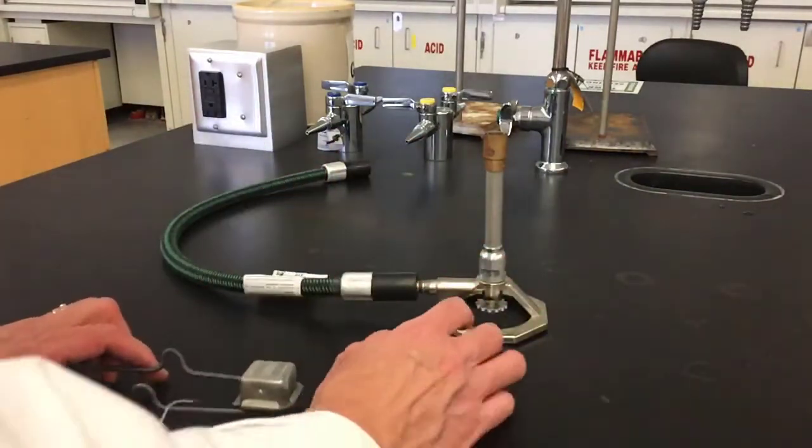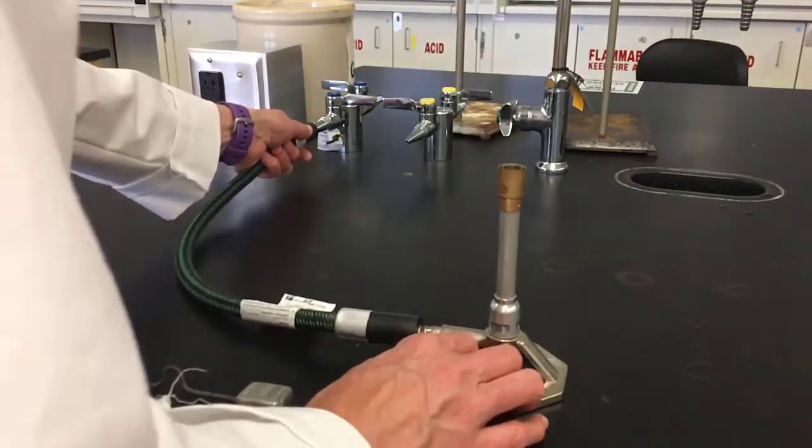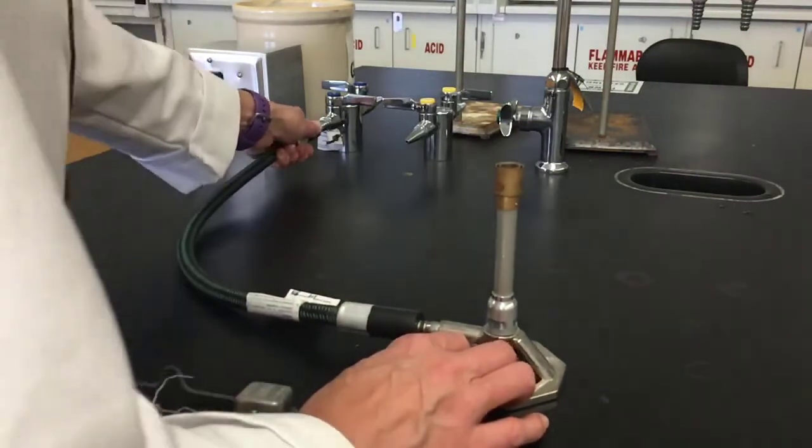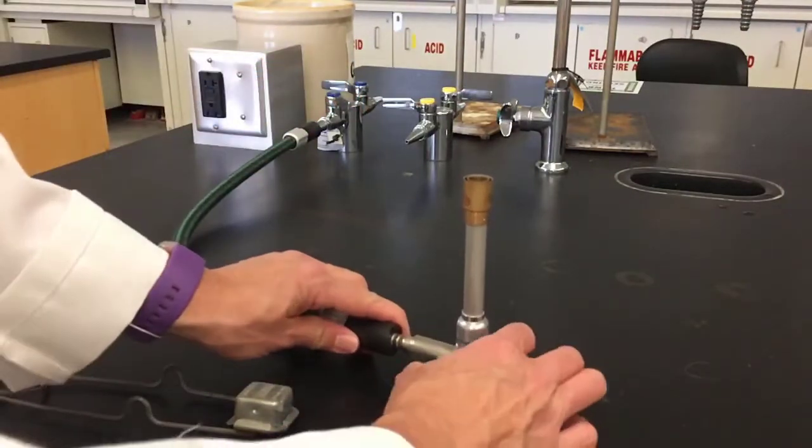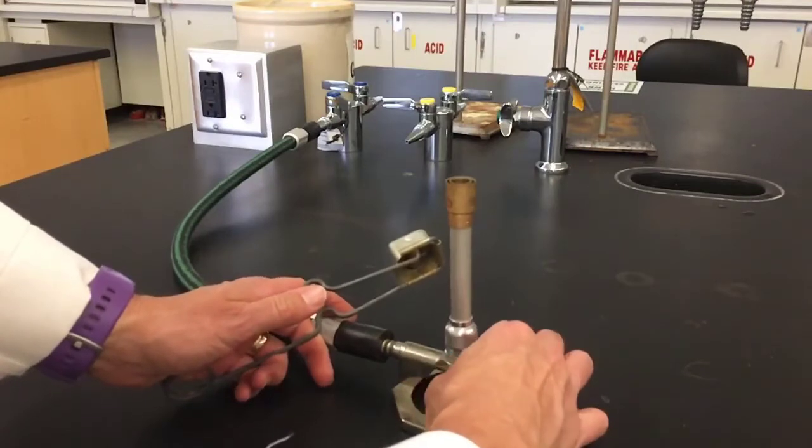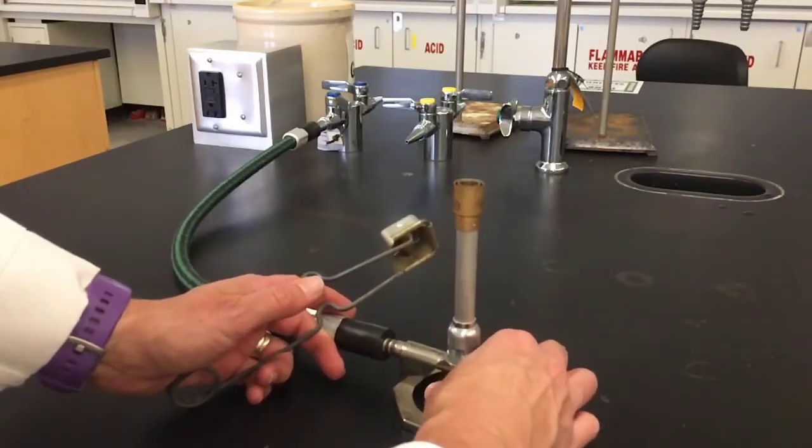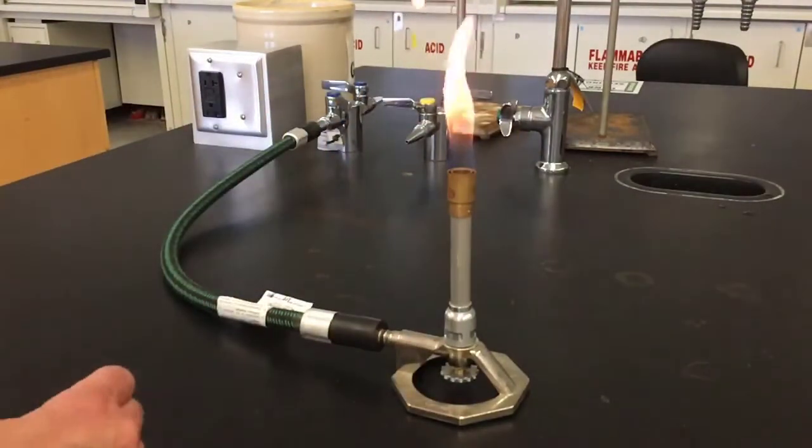So once you light the Bunsen burner flame, we need to stick the hose onto the nozzle and turn on the gas. Open up the needle valve until you hear the gas flowing. It should make a sound. Once you hear the sound, go ahead and light the flame.